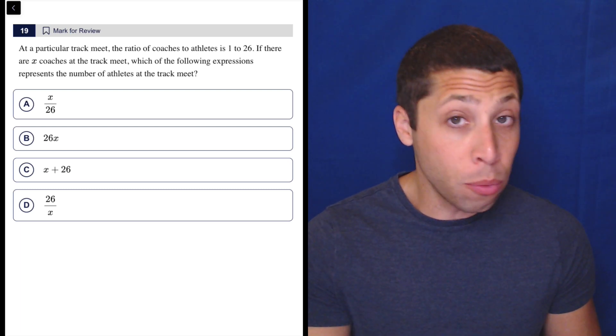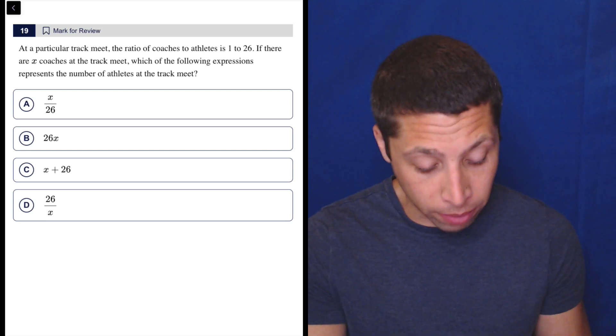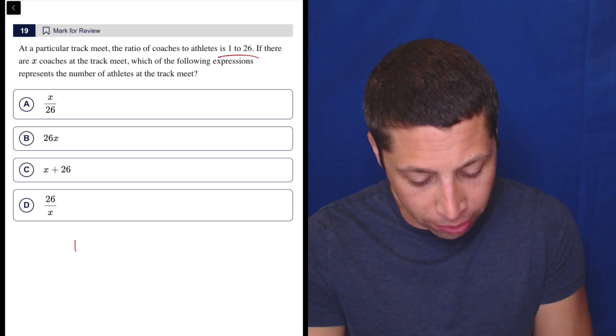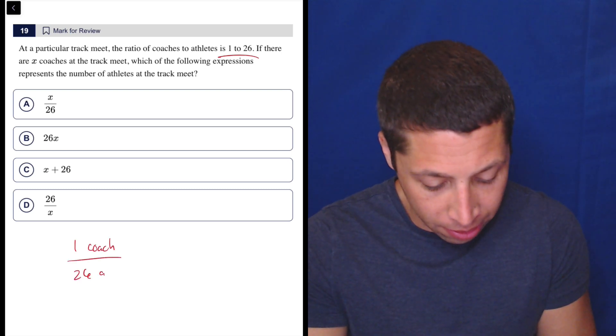So if you kind of just do this in a very literal way, you could think about ratios here. So if we just wrote down what they told us, this is coaches to athletes. So one coach for every 26 athletes.